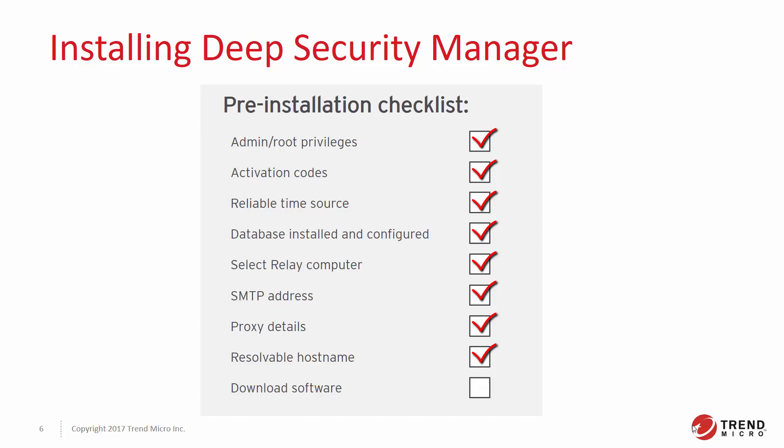For proper communication, ensure that each of your computers can resolve the hostname of the Deep Security Manager computer and a relay-enabled agent. You will be asked to enter the Deep Security Manager hostname as part of the installation process. If you do not have a DNS, you can enter the Deep Security Manager host IP address. Finally, you must download the necessary software before you can begin the installation. Once you are confident that all the items on the checklist have been looked after, you can proceed to the installation.